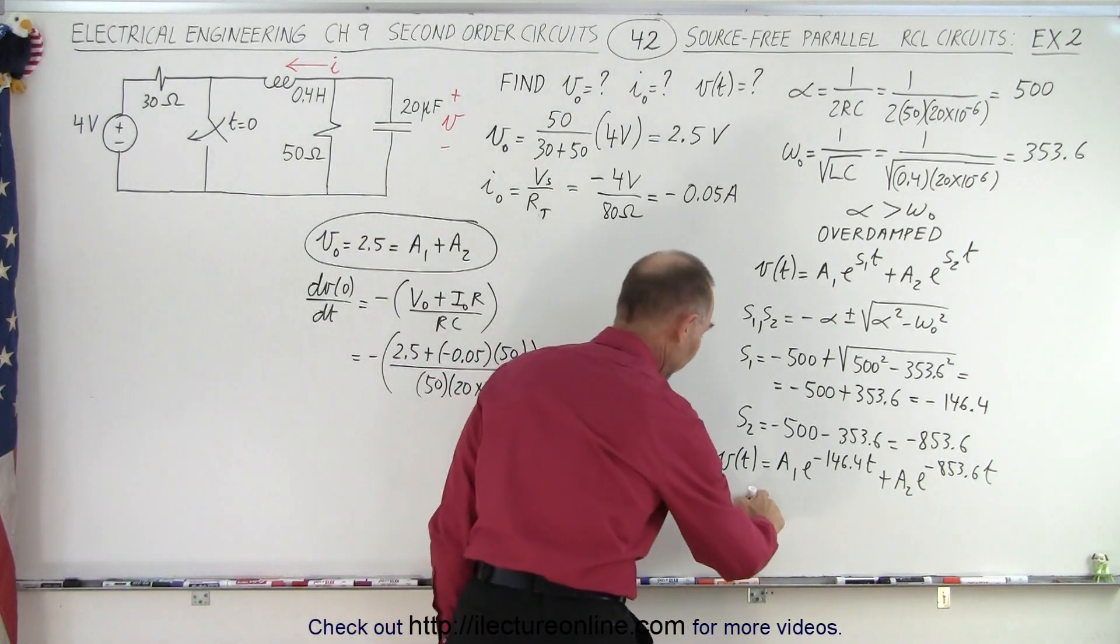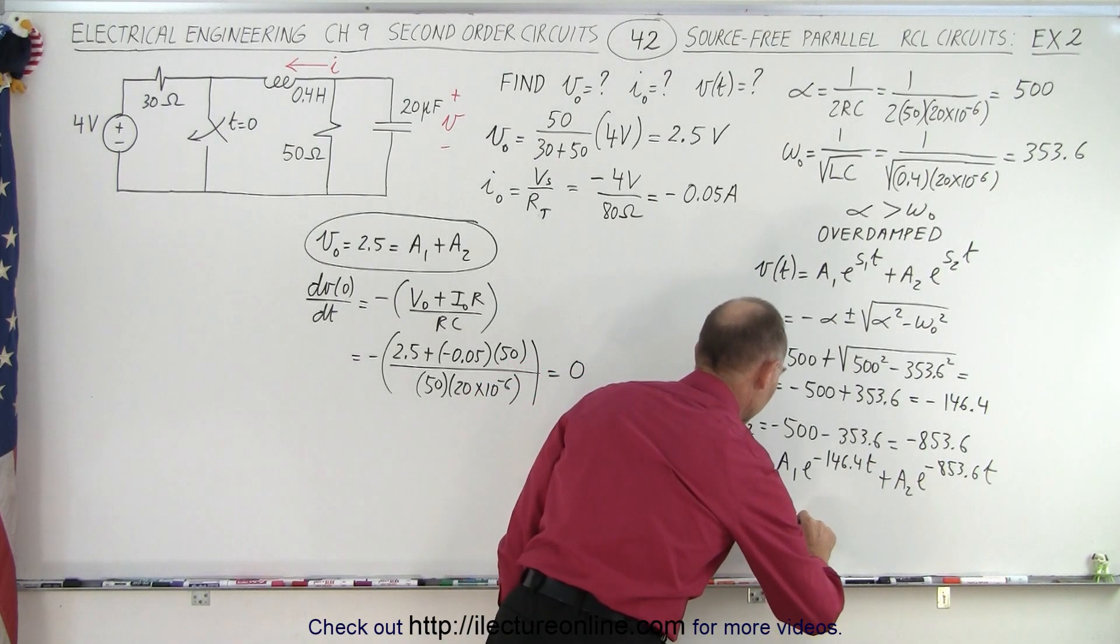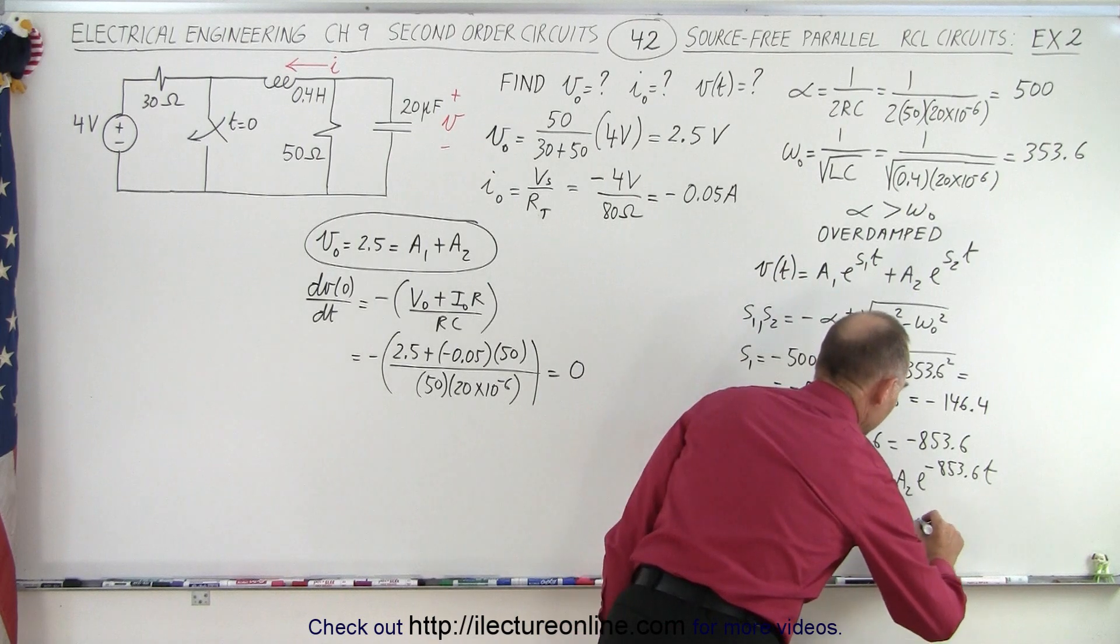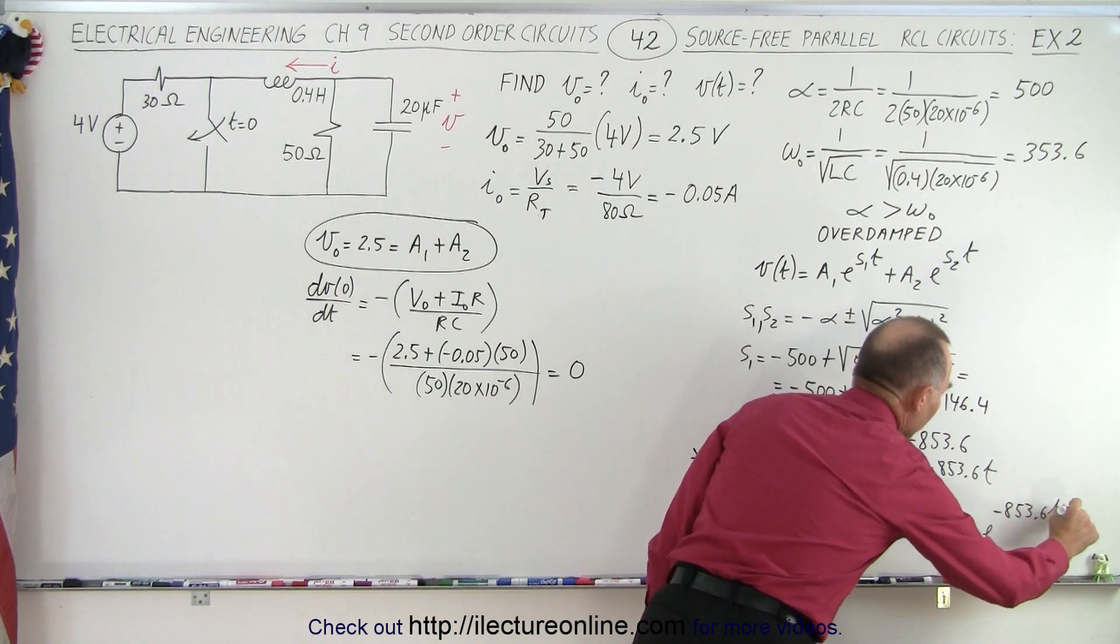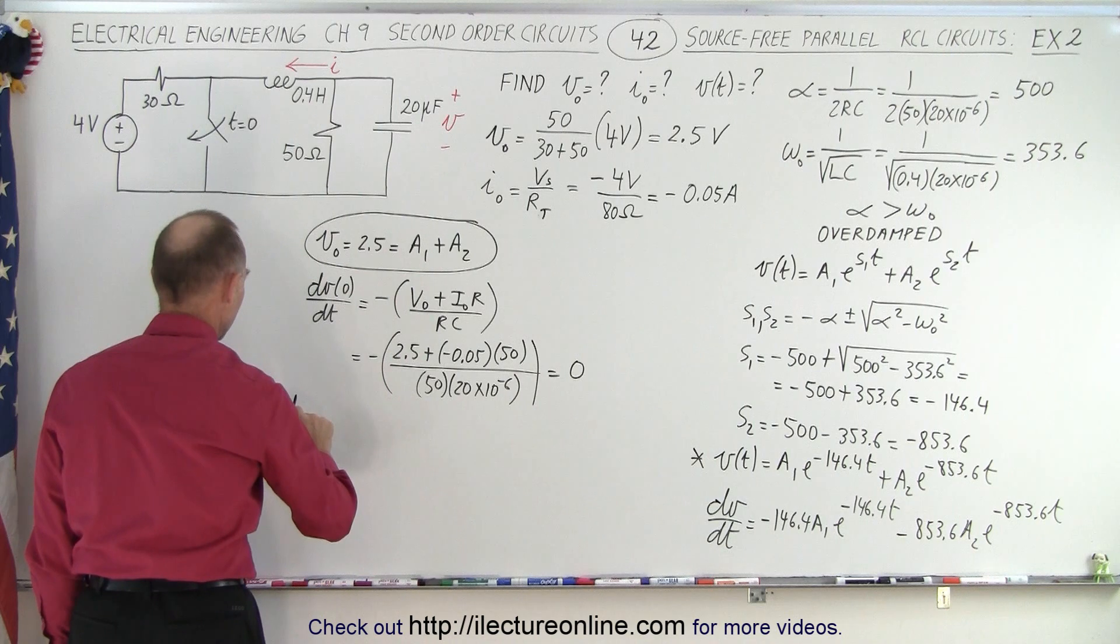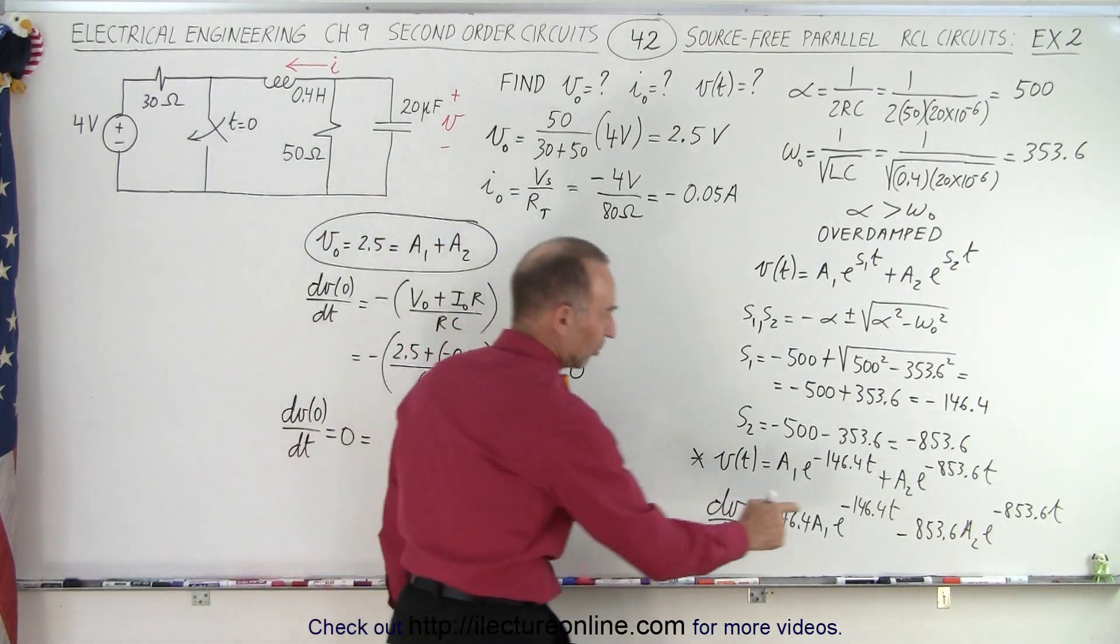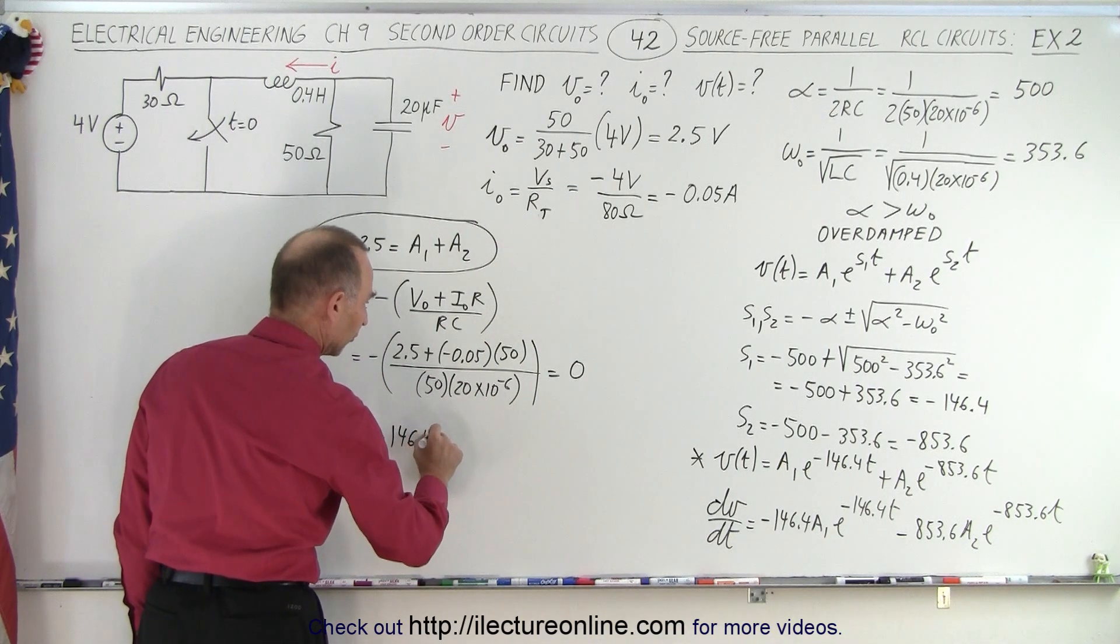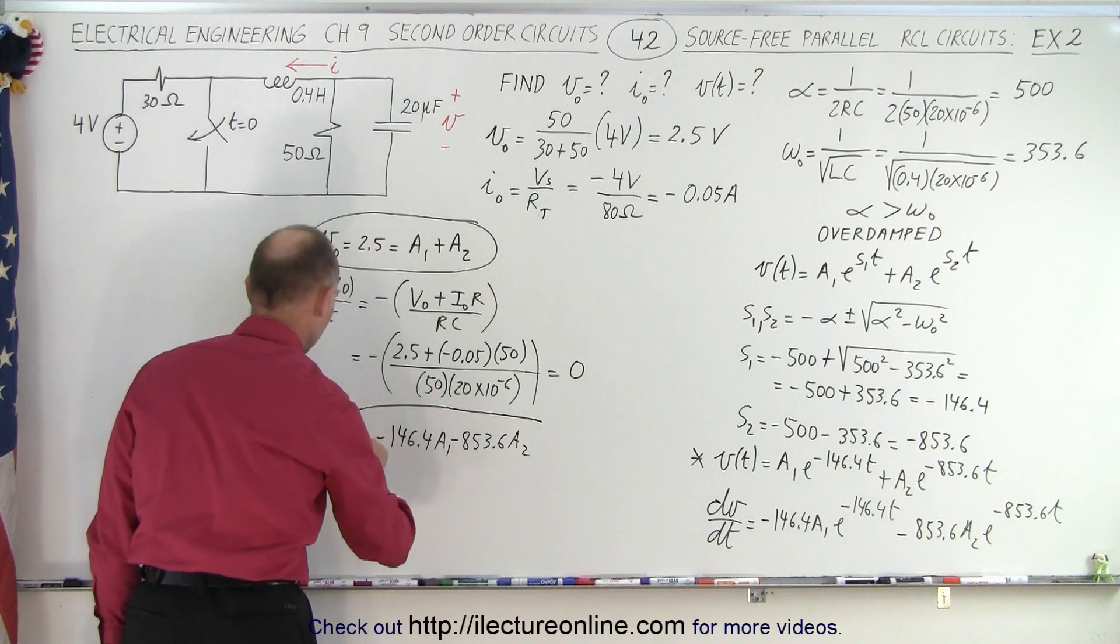So now what we can do is, we can take the derivative of this, which is DVDT, which is equal to minus 146.4A1 e to the minus 146.4T minus 853.6A2 e to the minus 853.6T. So once we take the derivative of this, and then we say that when time equals 0, it's equal to 0, we can then say that DVDT when time equals 0 is equal to 0, is equal to, plug in 0s for the Ts, and all we have is we get minus 146.4A1 minus 853.6A2. And there's our second equation that relates A1 to A2.